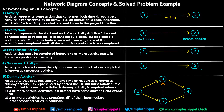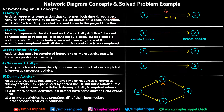Starting off with some concepts based on network diagrams. First, we have Activity. An activity represents some action that consumes both time and resources, and it is represented by an arrow — as you can see, this yellow arrow on screen is an activity. It can be an operation, a task, an inspection, or any work that consumes time and resources. Each activity has a start and end time in the project timeline.